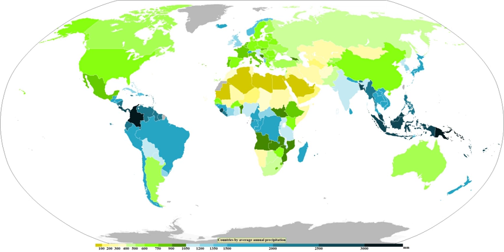However, if the sub-freezing layer beneath the warm layer is too small, the precipitation will not have time to re-freeze, and freezing rain will be the result at the surface. A temperature profile showing a warm layer above the ground is most likely to be found in advance of a warm front during the cold season, but can occasionally be found behind a passing cold front.